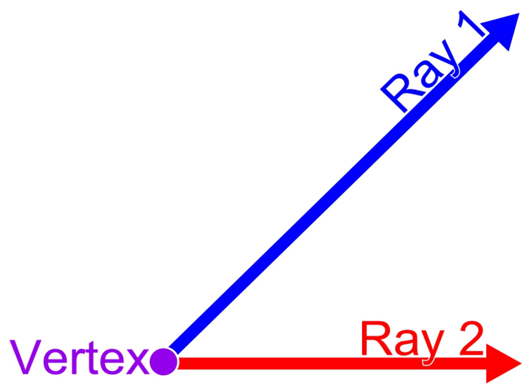Therefore, both angle A and angle B have measures equal to X and are equal in measure. Adjacent angles, often abbreviated as adj., are angles that share a common vertex and edge but do not share any interior points. In other words, they are angles that are side by side, or adjacent, sharing an arm.